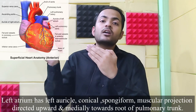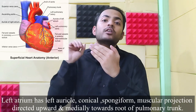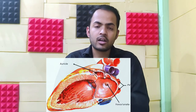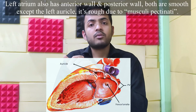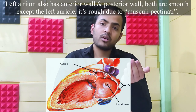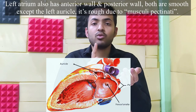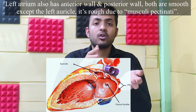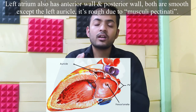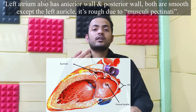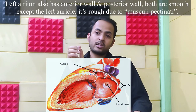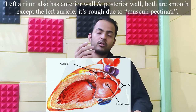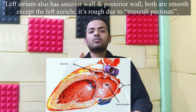The conical projection of this left auricle directs upward and medially towards the root of the pulmonary trunk. Internally, just like the right atrium, this left atrium also has an entry wall and posterior wall, but it has no sulcus or ridge. Most of the wall of the left atrium is smooth, except the left auricle because it has musculi pectinati.